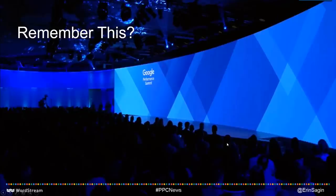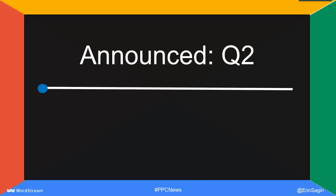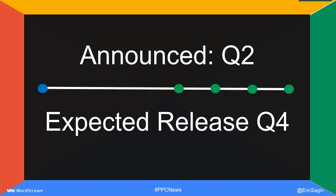A few months back, Google had their big performance summit — it was a huge deal. We had a huge webinar because Google announced all the big things they're releasing in the coming months as well as 2017. It was really highly anticipated and really exciting. One of the biggest things they shared was expanded text ads. Advertisers got excited and we were ready to implement all of these new things. Google announced these changes back in Q2 in May. They told us that expanded text ads, device-based bidding, and the new AdWords interface program would all be coming in late Q4, early Q1 of next year.